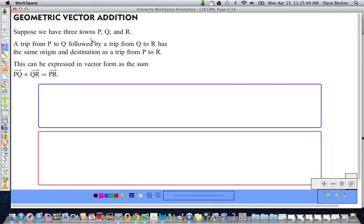Let's consider this. Suppose we have three towns, P, Q, and R. A trip from P to Q followed by a trip from Q to R has the same origin and destination as a trip from P to R.